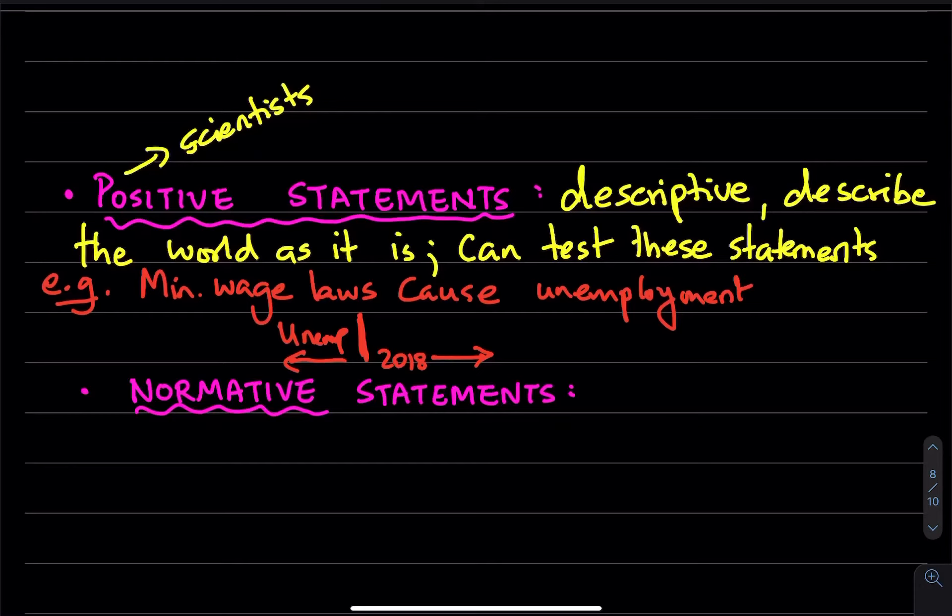The other type of statement that economists make are normative statements, and this is when they are trying to act as policy advisors. When they make normative statements, they are trying to be prescriptive.